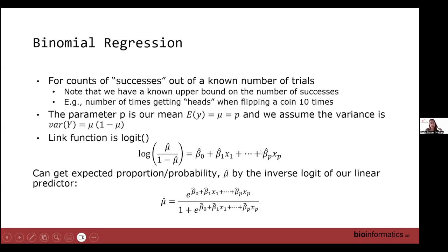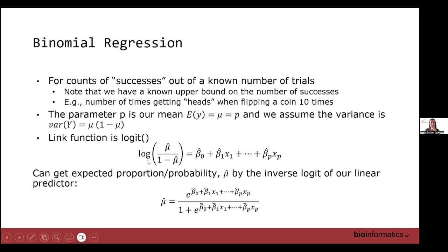For binomial regression, everything is the same as logistic regression except now we have counts of successes out of a known number of trials — a known upper bound on the number of successes. We have the logit link again, and we can solve for our estimated probability mu-hat using the inverse logit.